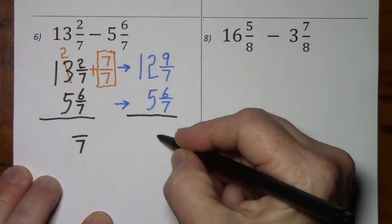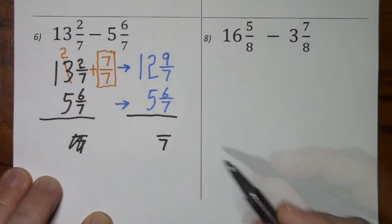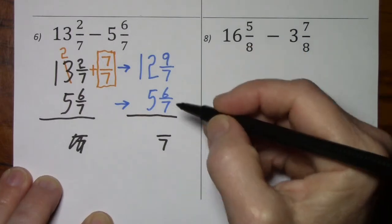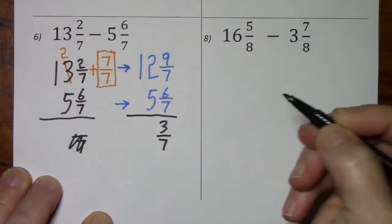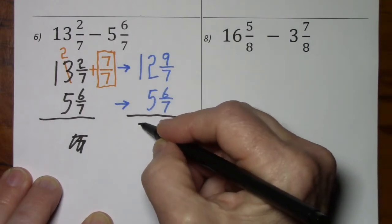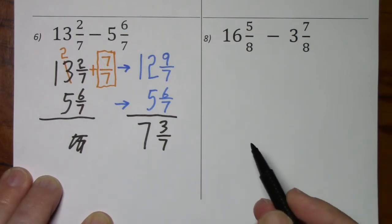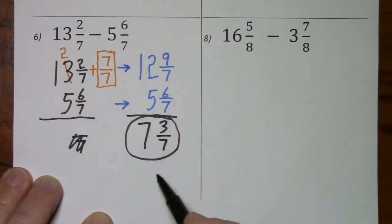Now finishing up this problem, we'll keep our denominator. And then 9 subtract 6 leaves us with 3. 12 subtract 5 leaves us with 7. So 7 and 3 sevenths is our final answer.